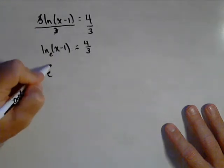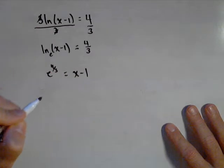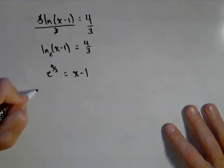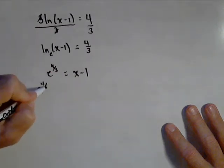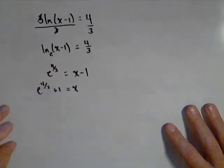So e^(4/3) equals x - 1. Add 1 to both sides, and you get e^(4/3) + 1 equals x.